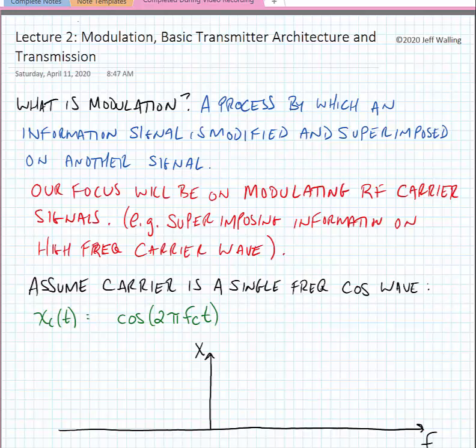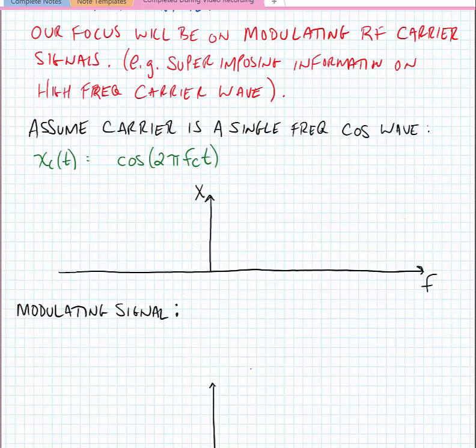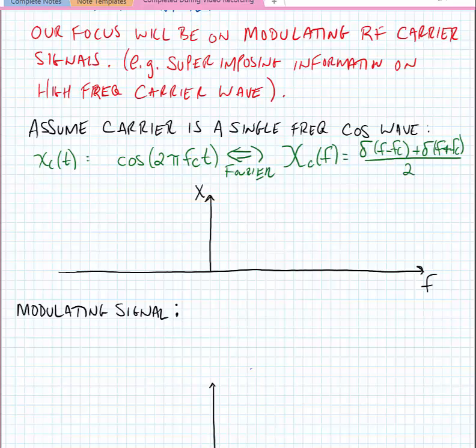Let's assume that our high-frequency carrier is a single frequency cosine wave that has a time domain equivalence of cosine of 2πfct. If we do a Fourier transform of this we'll find that we have two impulse functions that are offset by the carrier frequency and the negative carrier frequency. We can plot this function, we just have impulses at minus fc and at plus fc and they have a value of half of the amplitude of the time domain waveform.